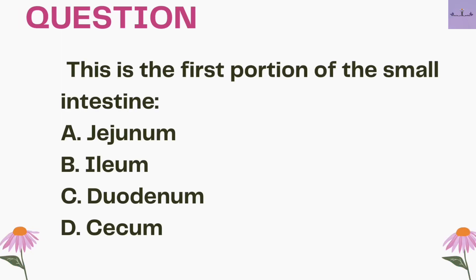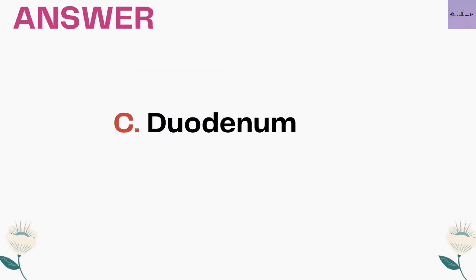Next question: this is the first portion of the small intestine — A. Jejunum, B. Ilium, C. Duodenum, and D. Cecum. Cecum is part of the large intestine, so it is eliminated. The small intestine has three parts: the first is Duodenum, second is Jejunum, and third is Ileum. So the answer is option C, Duodenum.